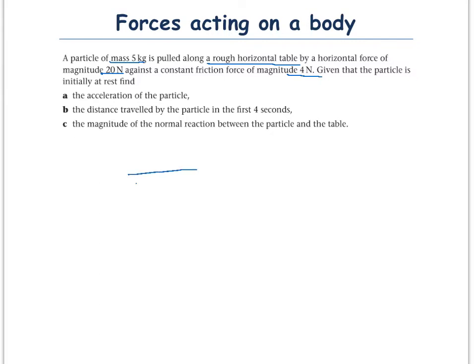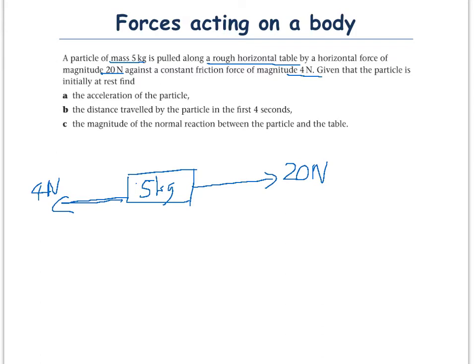You've got your particle, which is 5 kilograms, and it's moving in that direction with 20 newtons. The friction in the opposite direction, opposing motion, is 4 newtons. Now, as it's sat on a table, the weight of the particle is acting downwards — so 5 times the force of gravity. Because remember, weight is a force and mass isn't. So you've got to do mass times gravity to find the weight of the particle. And the reaction is acting upwards from the table.